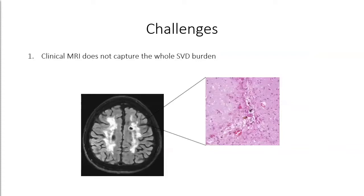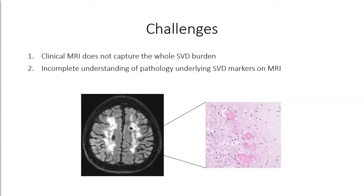The challenges in small vessel disease research are twofold. First, clinical MRI does not capture the whole small vessel disease burden — we only see the larger manifestations, missing smaller ones like a cortical microinfarct of about 200 microns in diameter, which is very hard to pick up with conventional MRI in living individuals. The second challenge is that we have an incomplete understanding of the pathology underlying some of these SVD markers; for instance, for white matter hyperintensities, we still don't fully understand what the pathological alterations are of the underlying vessels or what causes these MRI manifestations.